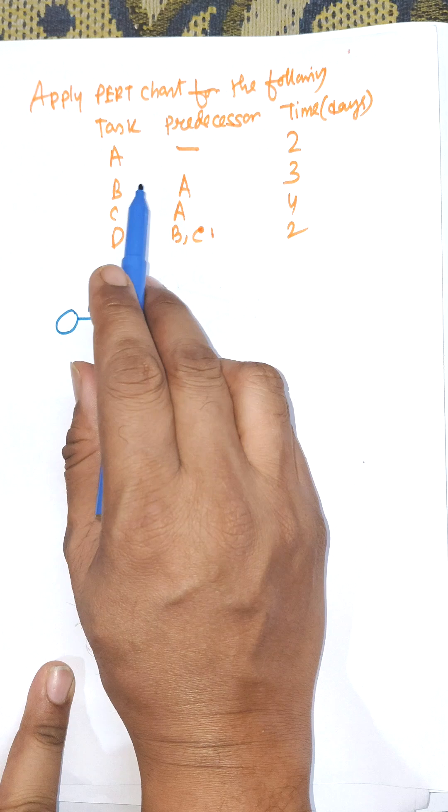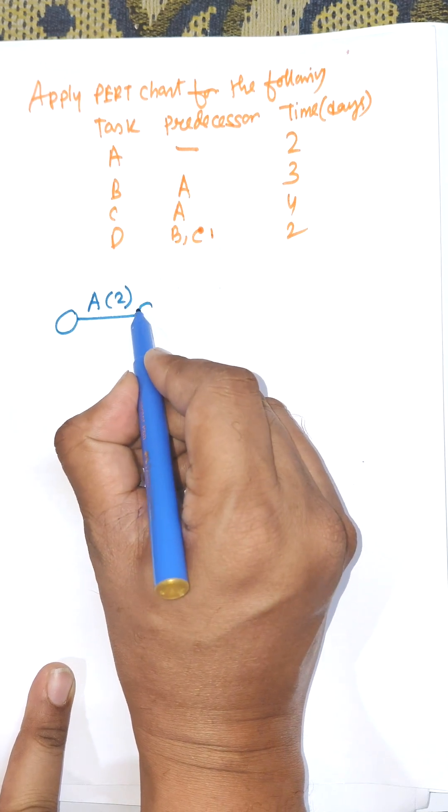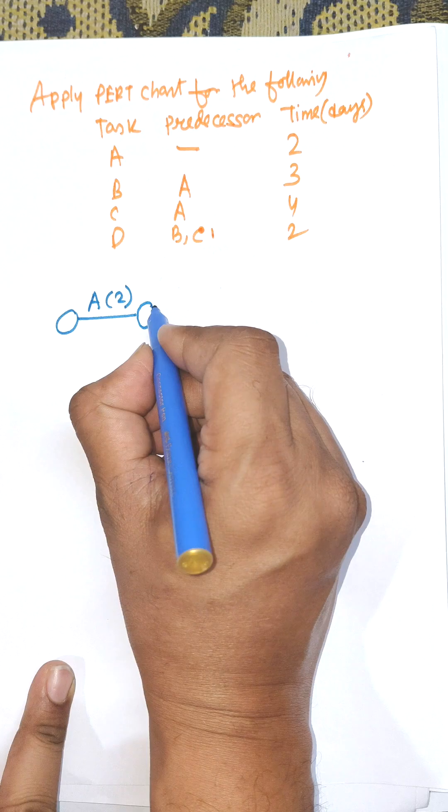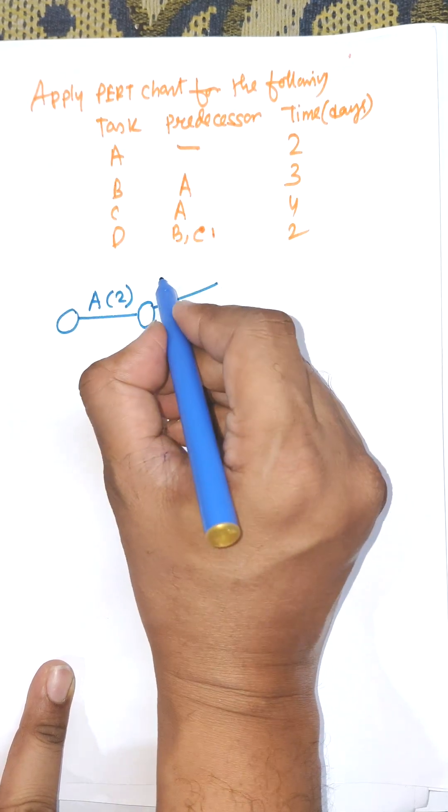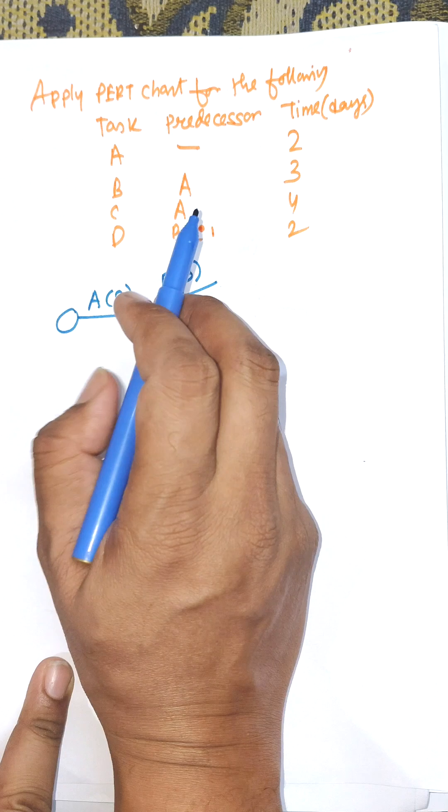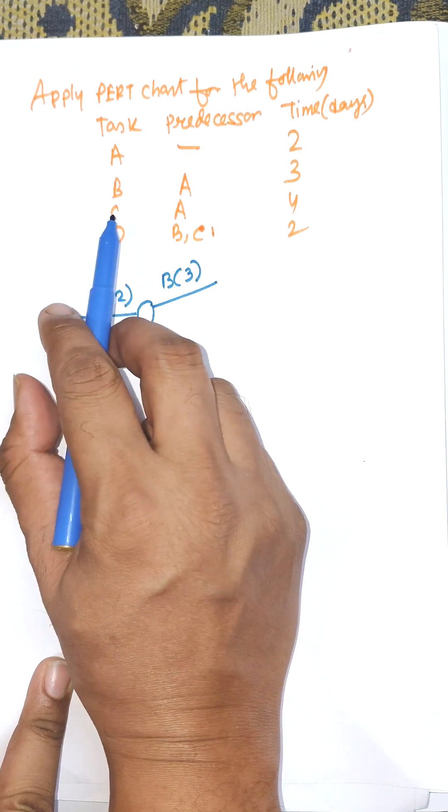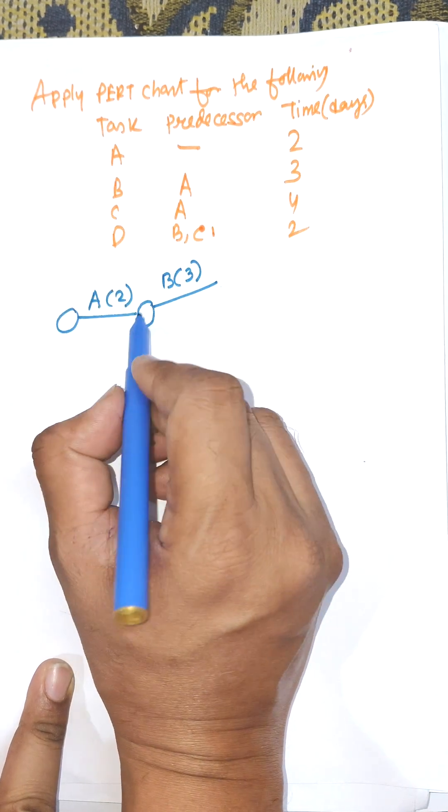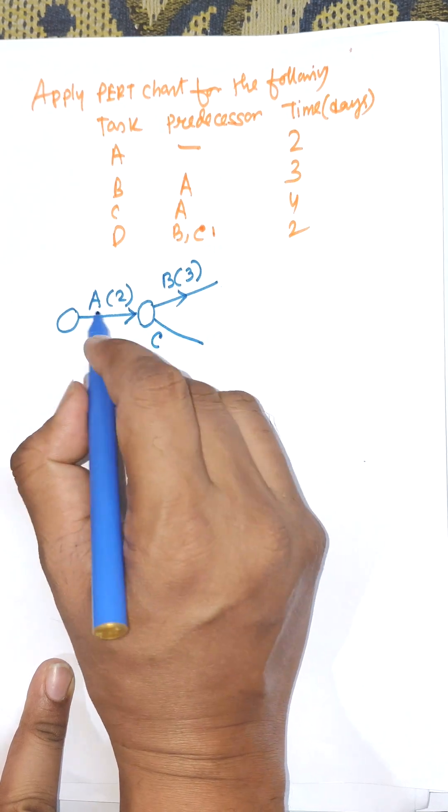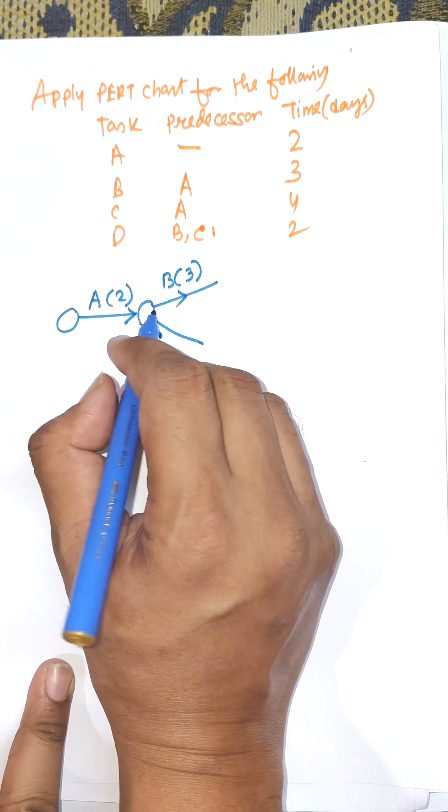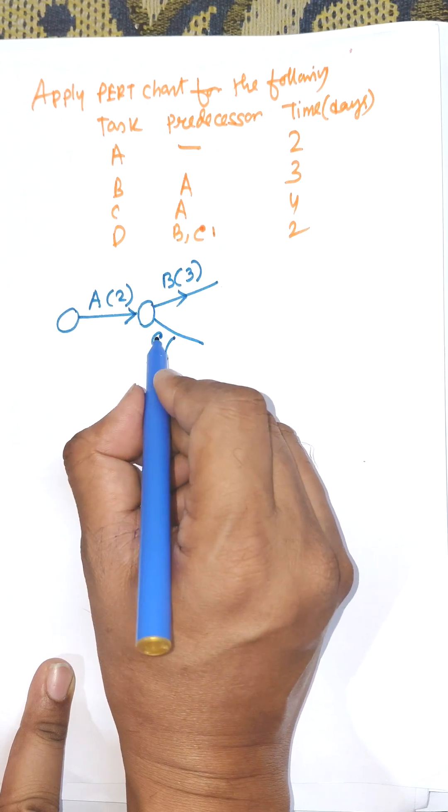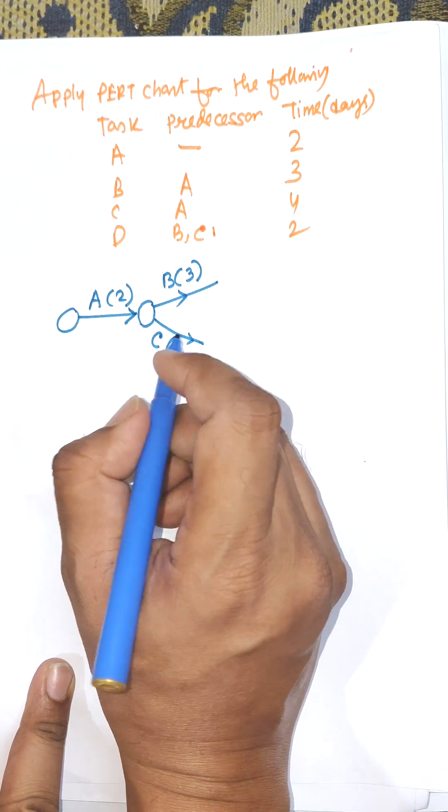We start from A, so this is the end position of A task. From here B will be executed, days for B is three. Starting for C is also, predecessor for C is also A, so C will start its execution when A finishes its execution. From this point C will further proceed to execute. The duration of C is four.